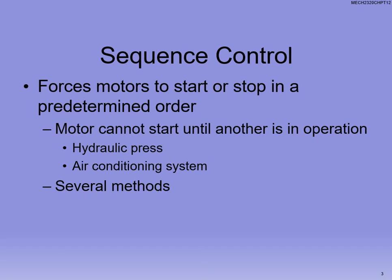So, sequence control — what's the whole purpose behind this? We want to be able to make motors start and stop, or start, or stop, or a combination of the two in a specific order. The first example is like a hydraulic press — you'd want the high pressure pump to turn on first before you could use the hydraulic press. And for an air conditioning system, you'd want the blower up and running before the compressor starts, since those are all on separate motors. The whole point is we want things to start and potentially shut down in a specific order.